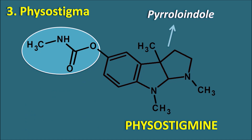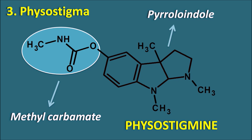Physostigmine also has a methylcarbamate moiety, which is very important for its action. Physostigmine inhibits acetylcholinesterase by binding to the serine residue, producing carbamylation at the serine OH group, thereby inhibiting the enzyme's activity. It is a medium-acting acetylcholinesterase inhibitor used in the treatment of glaucoma, and can also be used in the treatment of atropine poisoning because it increases cholinergic transmission at muscarinic receptors.